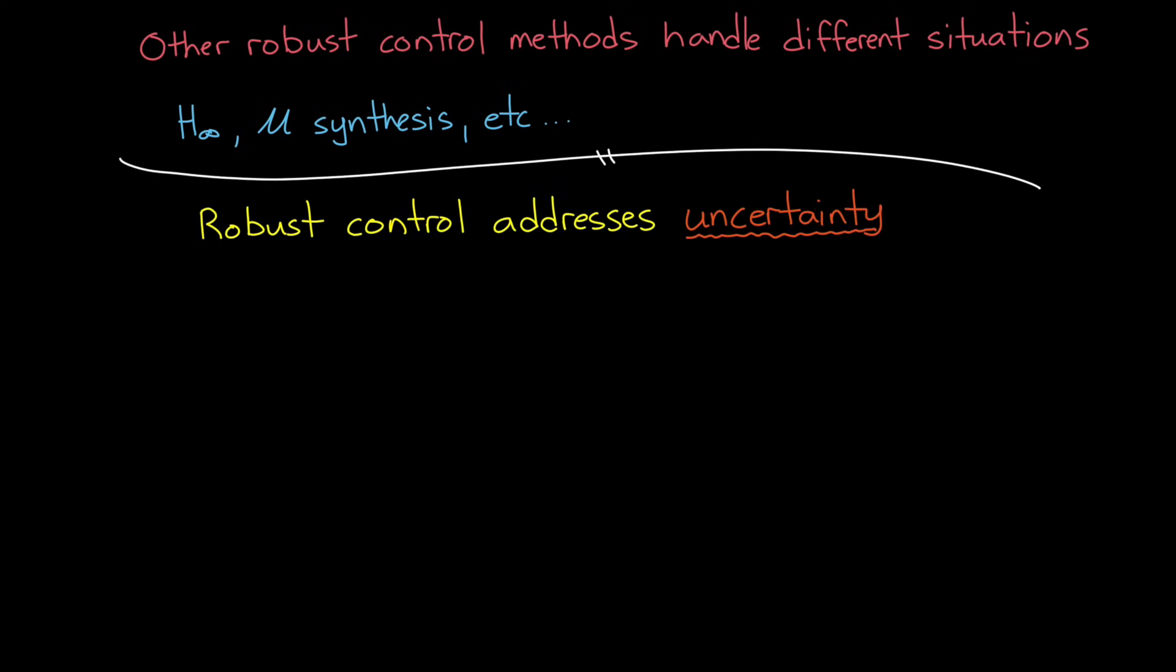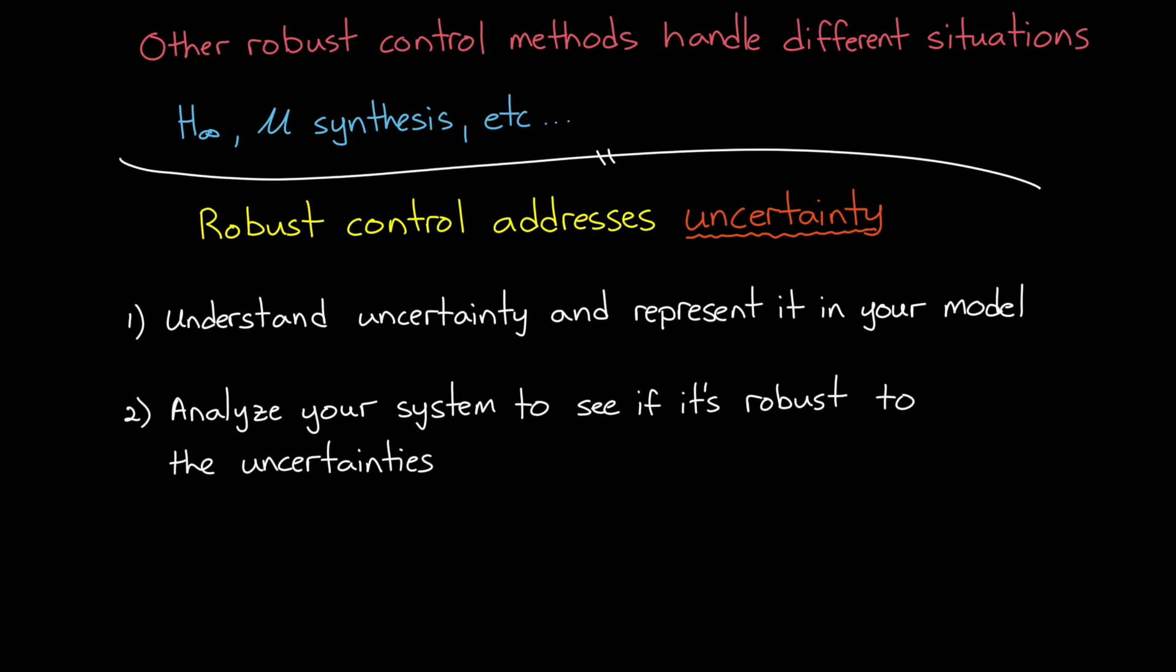And the major steps involved in robust control are one, understand uncertainty in your system and represent it in your model, two, analyze your system to see how robust it is to these uncertainties, and three, if the system is not sufficiently robust, then make changes to the system so that it is. And loosely speaking, that's what we're going to cover over the next three videos. So I hope you're looking forward to it.